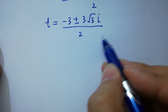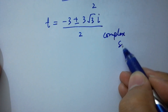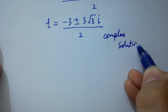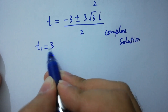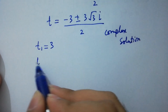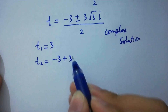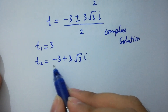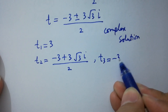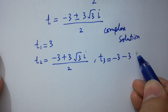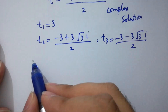So we have three solutions. t₁ equals 3 (our real solution). t₂ equals (minus 3 plus 3i times square root of 3) over 2, and t₃ equals (minus 3 minus 3i times square root of 3) over 2 (our complex solutions).